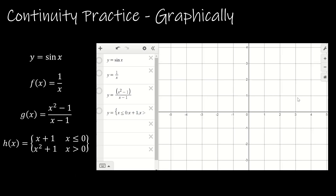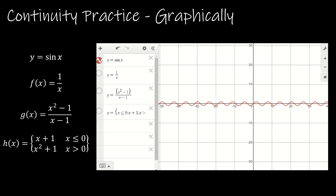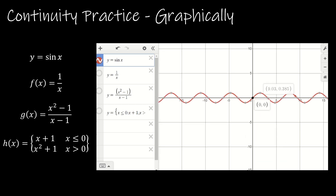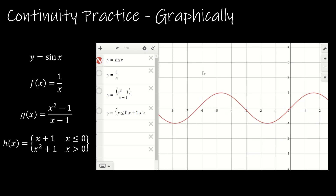I want to look again at those same four functions that we just analyzed analytically. I'm going to use Desmos for this, though you can certainly use your TI-84 or 83. So I've already entered the functions. Let's start with y equals sine of x — we can see that all across sine of x the function is defined. We could zoom way out and it's going to continue to be that way. So that is our sine function, continuous everywhere.